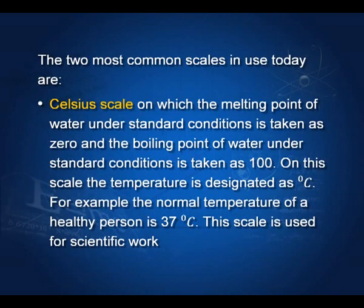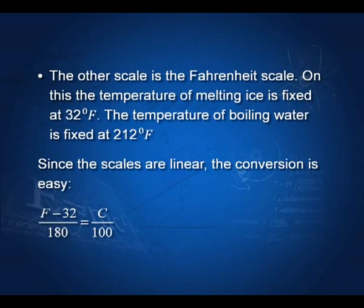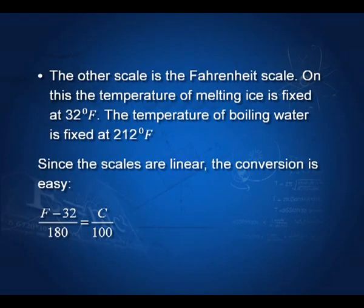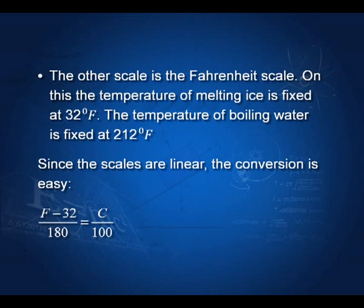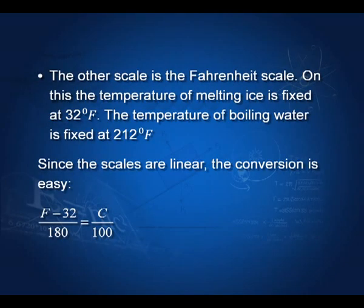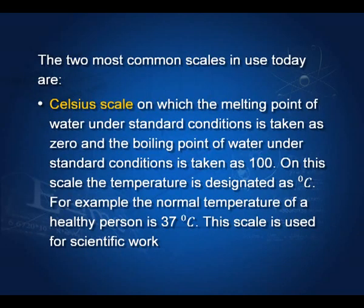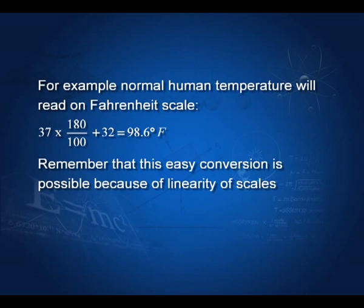You are familiar with the Celsius scale. The other scale used is the Fahrenheit scale. For scientific purposes, we use only the Celsius scale, though in many countries the Fahrenheit scale is still used. On the Fahrenheit scale, the temperature of melting ice is 32 degrees and the temperature of boiling water at standard conditions is 212 degrees. To convert from one scale to another: (F − 32) / 180 = C / 100. The temperature of a healthy human body is 37 degrees Celsius, which converts to 98.6 degrees Fahrenheit.